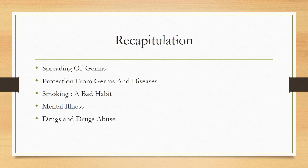Recapitulation of the previous week. In the previous week, the first topic we read was spreading of germs. We came to know that germs are spread through many means, and the most common means are through air, through water, or through personal contact. We read about protection from germs and diseases. One of the most common ways is sterilization, then vaccination, and then taking care of cleanliness of the surroundings.